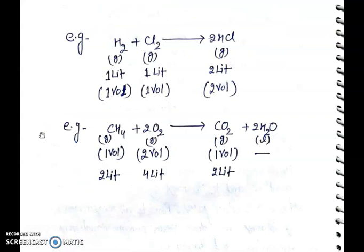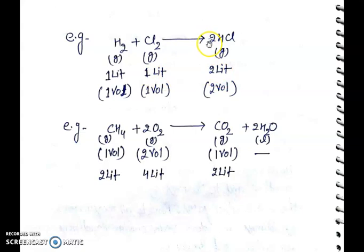For example, when one mole of hydrogen gas reacts with one mole of chlorine gas to give 2 moles of HCl gas, we can say that one liter of hydrogen gas reacts with one liter of chlorine gas to give 2 liters of HCl gas — or equivalently, one volume of hydrogen reacts with one volume of chlorine to give 2 volumes of HCl gas.